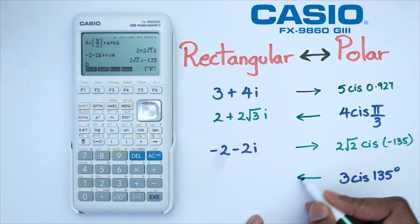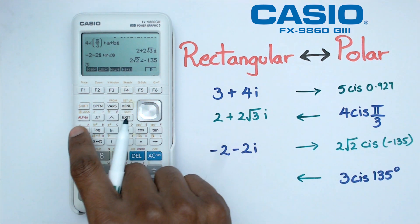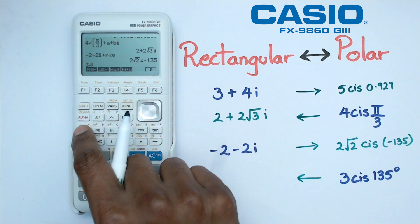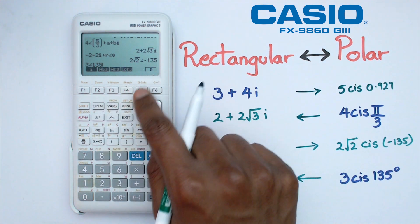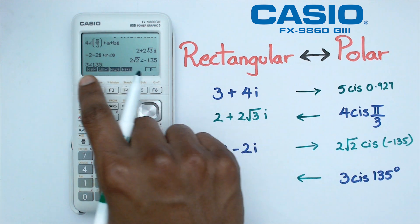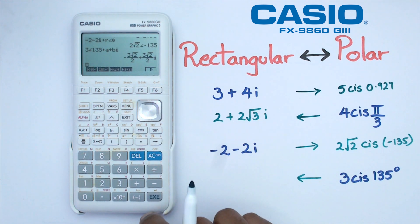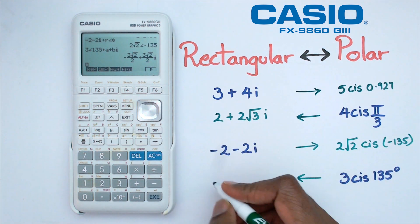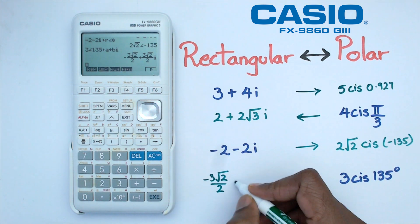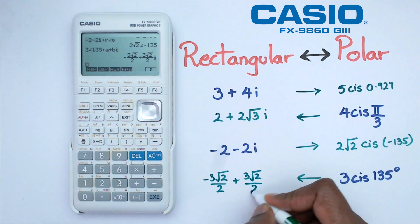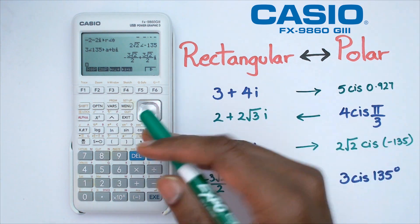Now we're going to look at polar to rectangular form and we're going to keep this in degrees. We're going to enter 3 cis 135 degrees — using shift X for the cis symbol — and put in 135. Once again we go into option, complex, F6 for the next page, and we're going from polar to rectangular so we click on F4. Press equals and the complex number comes out as negative 3 root 2 over 2 plus 3 root 2 over 2 i. And that pretty much covers how to convert between rectangular form and polar form on this Casio graphics calculator.